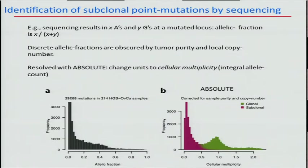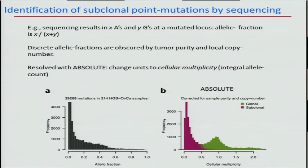Using ABSOLUTE, you now know the integer allelic copy numbers for every position in the genome and the tumor purity. With that and the allelic fraction, you can rescale raw allelic fractions into multiplicity estimates. There's a nice peak at 1.0, meaning the modal point estimate is about one copy of a mutant allele per cancer cell for the clonal cases. You also see an additional peak on the left colored pink — we surmise these are actually subclonal mutations in these tumors.